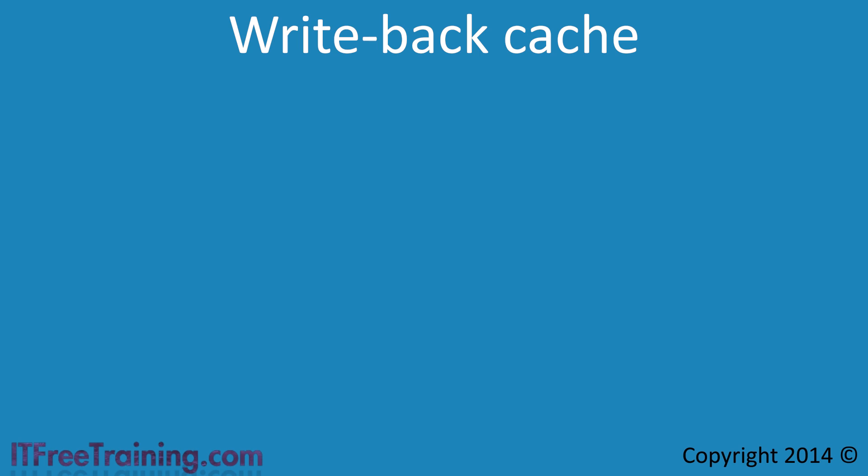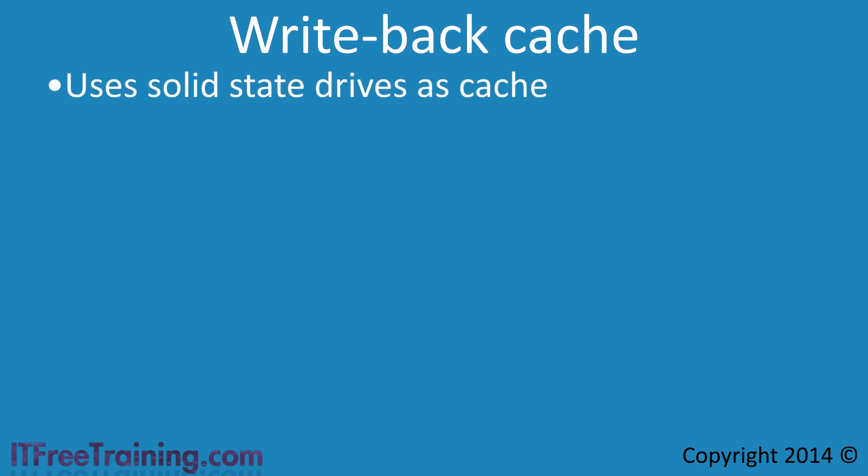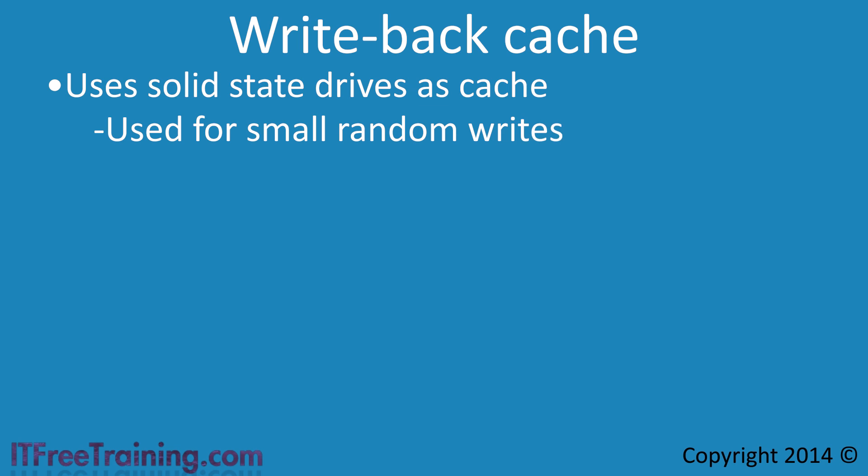The next feature is Write Back Cache. This feature allows solid state drives to be used as a cache for the mechanical hard drives. This cache is used for small random writes. Often in enterprise systems, small random writes form a large percentage of the workload. Since mechanical drives are slow for random writes, having a lot of small random writes slows down the overall system. Having these random writes cached on solid state drives before being transferred to the slower mechanical drives does a lot to speed up the overall responsiveness.